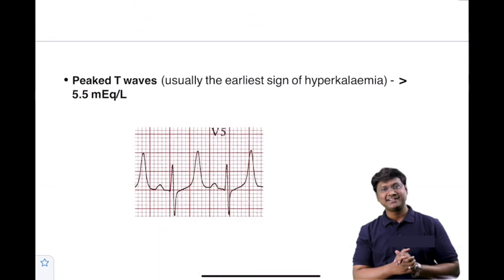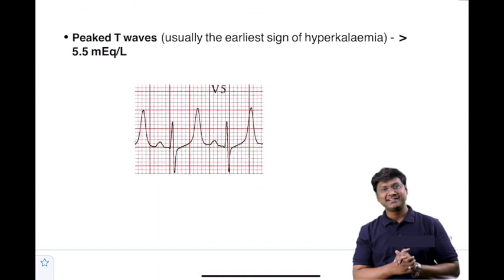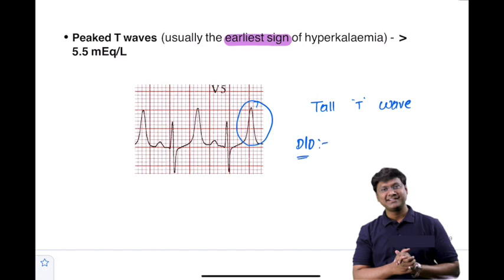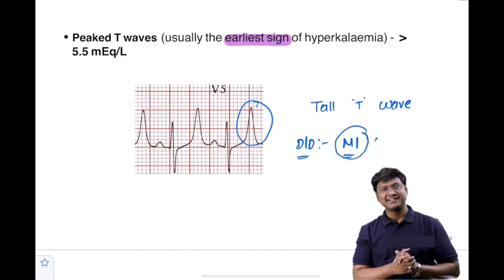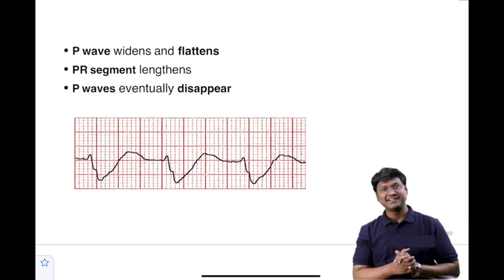The ECG changes in hyperkalemia: the earliest sign is tall tented T waves. The differential diagnosis for tall T waves includes early stages of myocardial infarction, but in MI you will have broad tall T waves, whereas in hyperkalemia it is tall tented T waves.